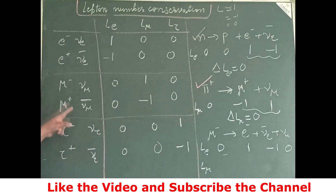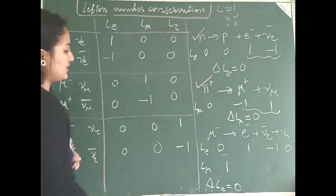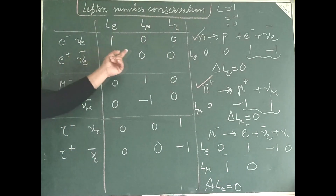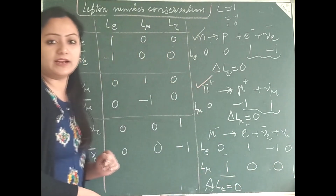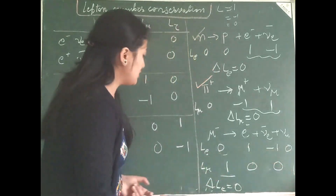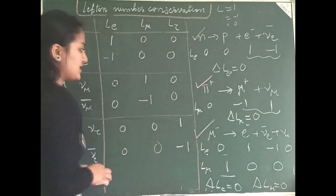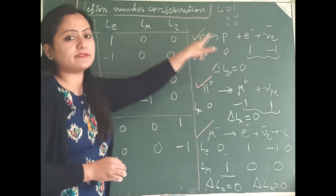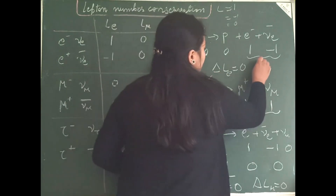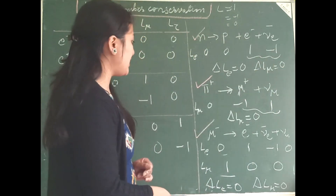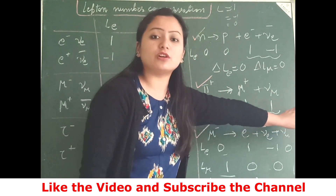Now for L mu: for mu minus it is 1, for e minus it is 0, for the electron anti-neutrino it is 0, and for the muon neutrino it is 1. So this side it is 1 and this side also it is 1 — delta L mu is 0. So all three interactions are allowed by lepton number conservation. Lepton number is conserved individually in all of these interactions.